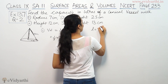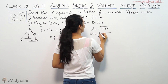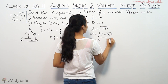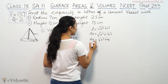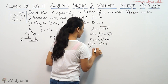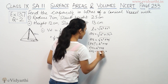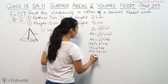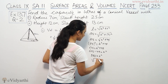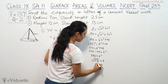So using the slant height formula: l² = h² + r². Slant height l is 25, and radius is 7. So 25² = h² + 7², which gives 625 = h² + 49. Therefore h² = 625 − 49 = 576, so h = 24 cm.